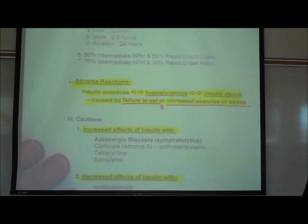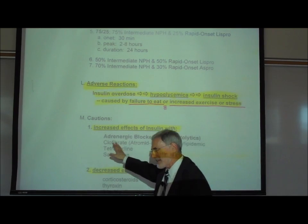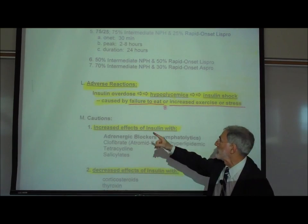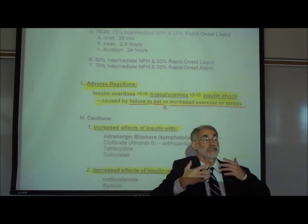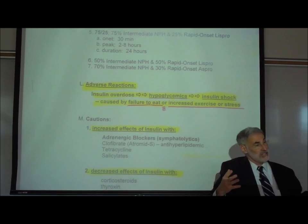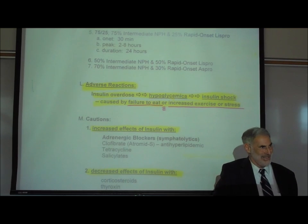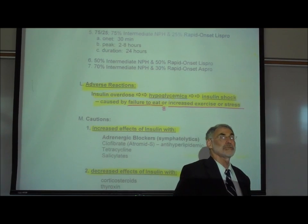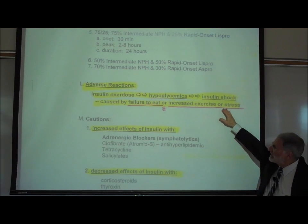The major adverse effect of insulin — regardless of type — is overdose. If someone takes too much insulin relative to their needs at that moment, their blood sugar level will drop too much. This is serious because brain cells run only on sugar, and if the blood sugar level drops too low, brain cells will die. This is called insulin shock.